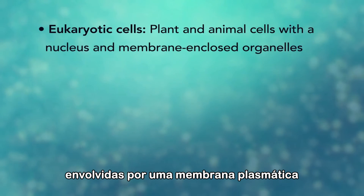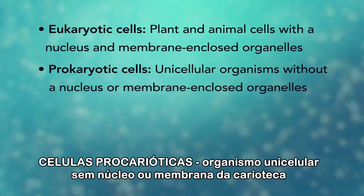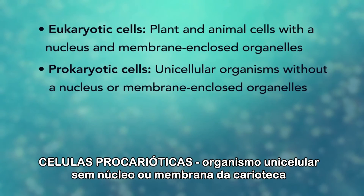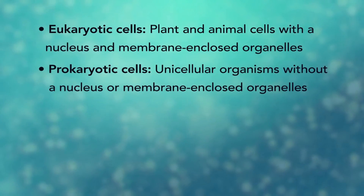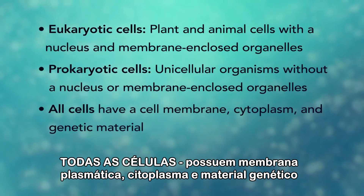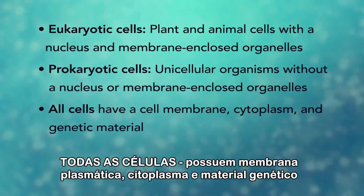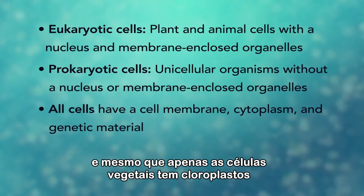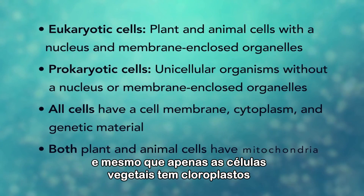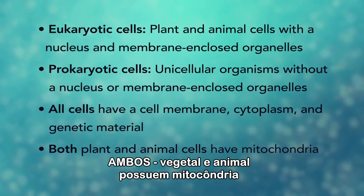In summary: all cells have a cell membrane, cytoplasm, and genetic material. Eukaryotic cells are plant and animal cells with a nucleus and membrane-enclosed organelles, while prokaryotic cells are unicellular organisms without these things. And even though only plant cells have chloroplasts, both plant and animal cells have mitochondria.